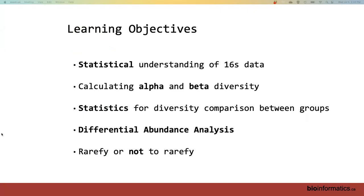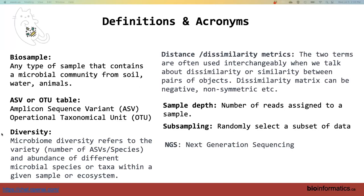What I'm trying to make you aware of is some statistical understanding of 16S data — what it looks like, how you calculate the different diversities (alpha and beta), what statistical tests you can do to compare two or more groups, what differential abundance analysis is, and the controversial question: to rarefy or not to rarefy. Most of what I'm talking about reflects how I feel about the field, based on the literature.